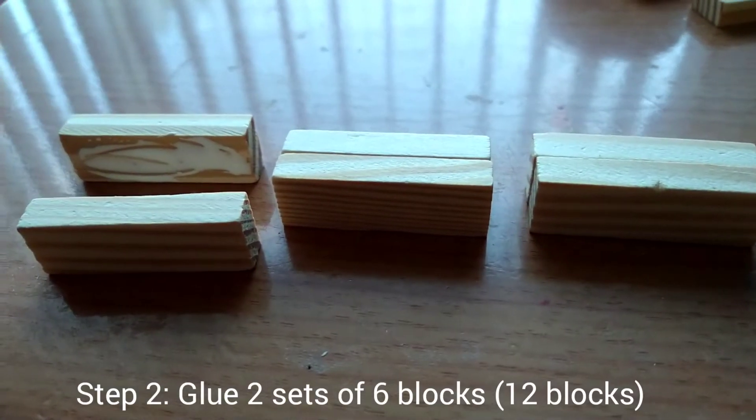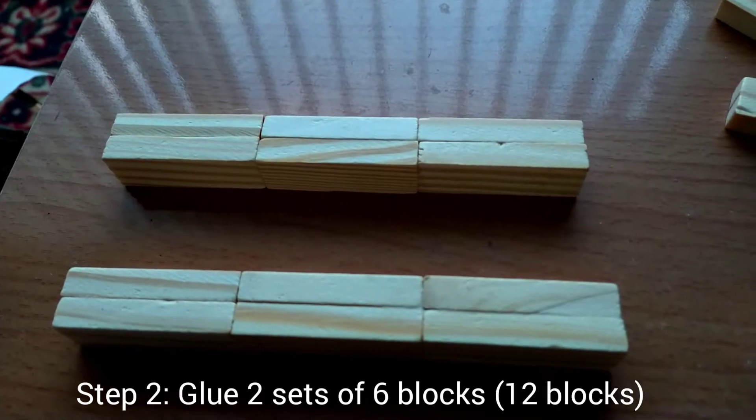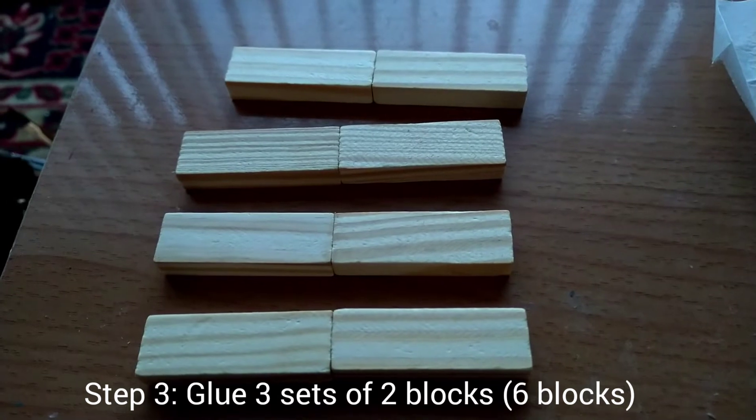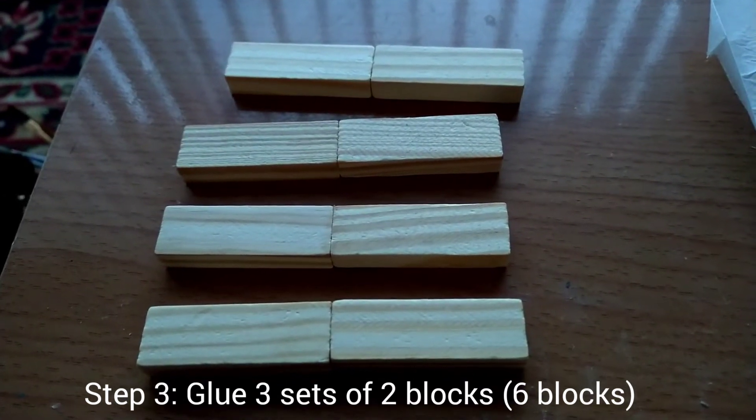Step 2: Glue another two sets of six blocks in the direction as you are seeing here. Here on step 3 you will need to glue only three sets of two Jenga blocks.